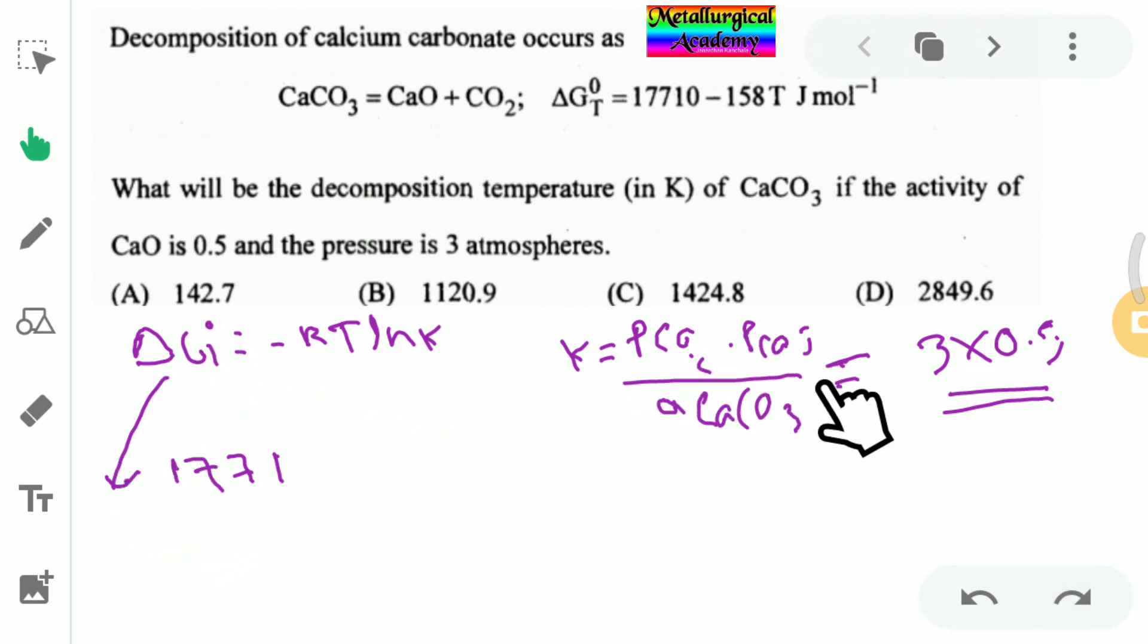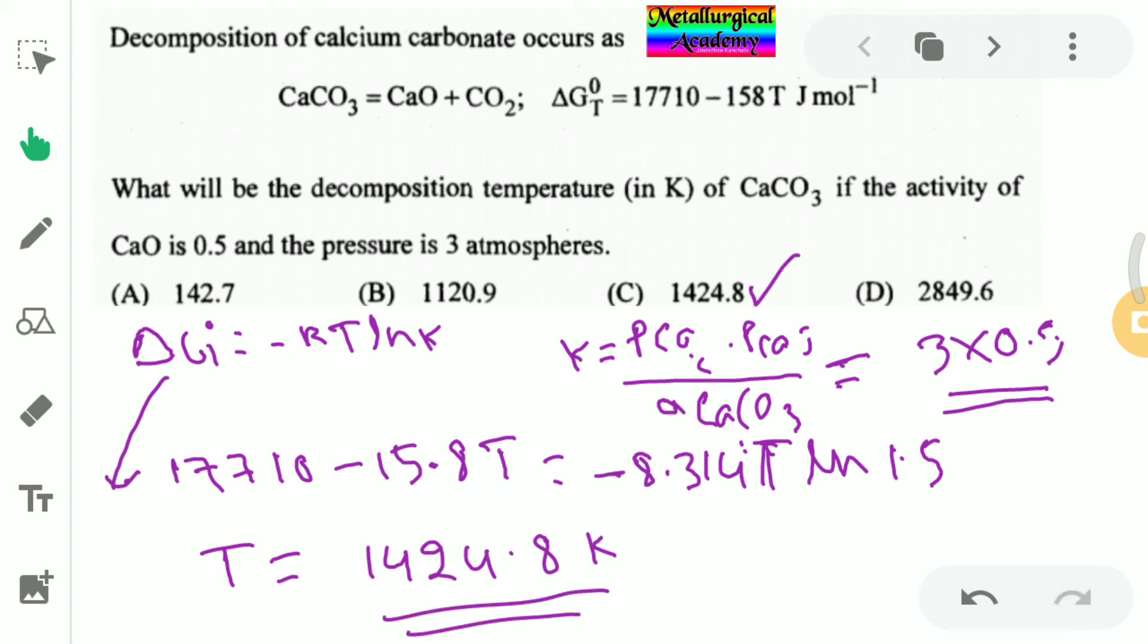If we substitute this value in the delta G equation, here delta G0 was 17710 minus 158 T is equal to 8.314 RT, 8.314 T. K value was given, it was 3 into 0.5 means around 1.5 something. Then 1.5. If we solve this equation we will get temperature decomposition temperature was 1424.8.